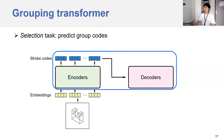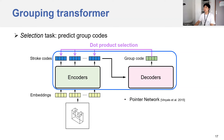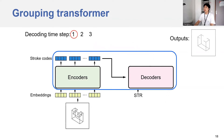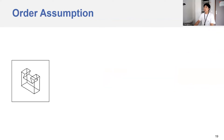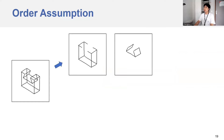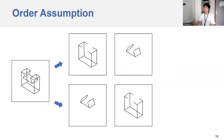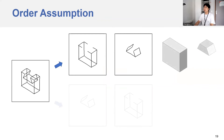We then propose our new grouping transformer and cast our problem as a selection task. Given the input, the encoder is similar to the translation encoder. However, inspired by the group pointer network, the decoder produces a group code each time, and we use dot product to select strokes belonging to the current group. For example, given the input, we obtain the first group in step 1. In step 2, given the previous group, we use the group code to select strokes belonging to the current group, and iteratively we will reach the end token to stop.